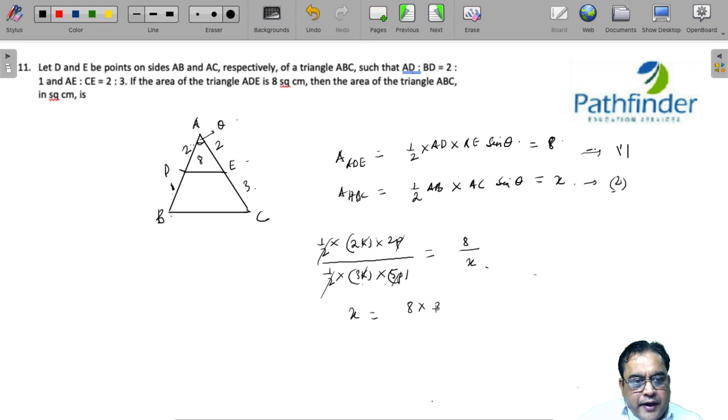X is equal to 8 × 3 × 5 / 4. Four into two, so you have 30 square centimeters as the answer. Simple question, really should not take you more than a minute to solve.